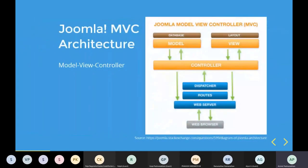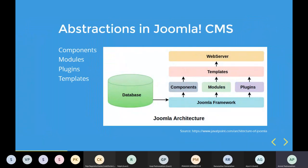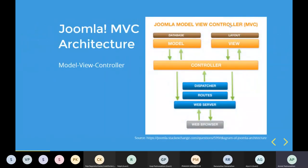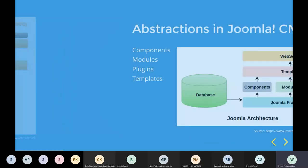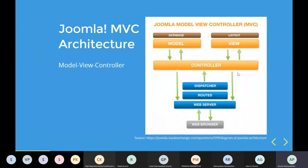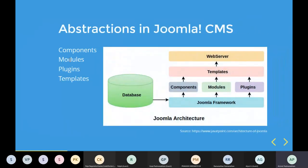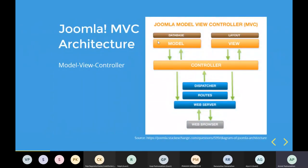Joomla also introduces four main useful abstractions: components, modules, plugins, and templates. Components have all three parts of MVC — model, view, and controller. Templates relate only to the view and give a certain look and feel for the website. Modules typically have only the view part and don't deal with the model or controller. These are the useful abstractions in Joomla.